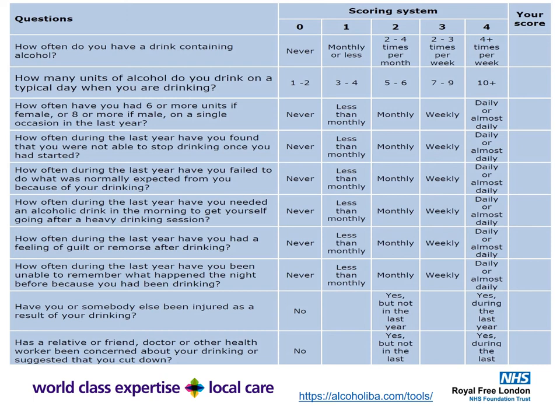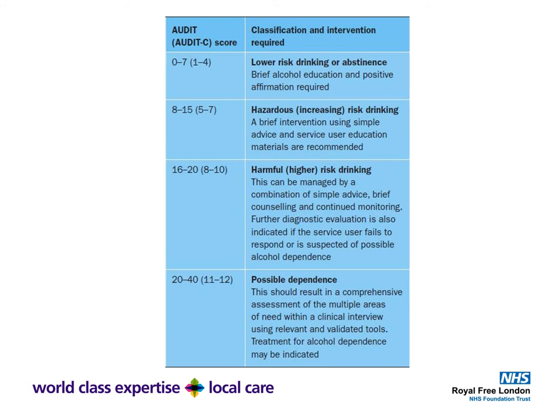Once you complete either the AUDIT-C or the full AUDIT, links to both tools are available at www.alcoholiber.com/tools. You then classify your patient: an AUDIT score of 0–7 or AUDIT-C of 1–4 indicates low risk or abstinence, warranting positive affirmation. At the other end, an AUDIT score of 20–40 or AUDIT-C of 11–12 suggests probable dependence, requiring comprehensive assessment and referral to alcohol liaison services. If a patient scores 11 or 12 on the AUDIT-C, you should refer them to hospital alcohol liaison services.